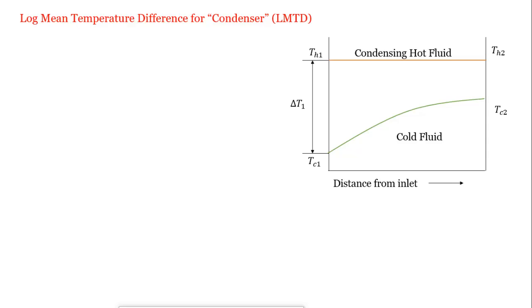Delta T1 is the temperature difference between TH1 and TC1, and delta T2 is the temperature difference between TH2 and TC2.